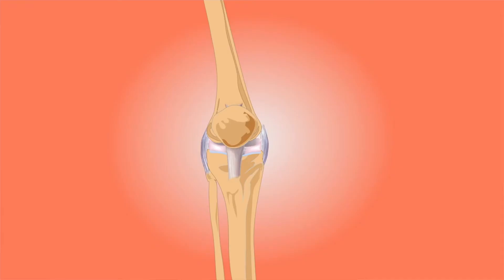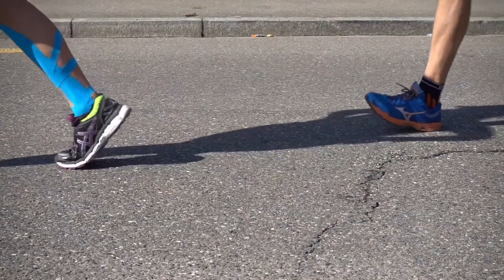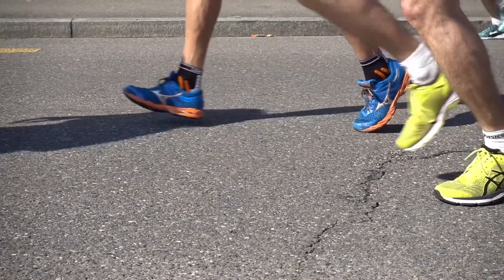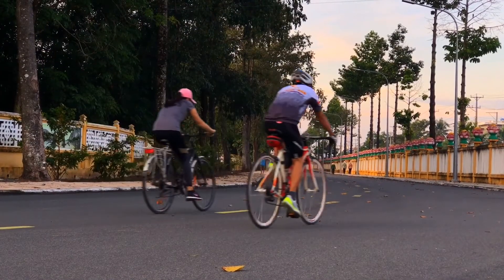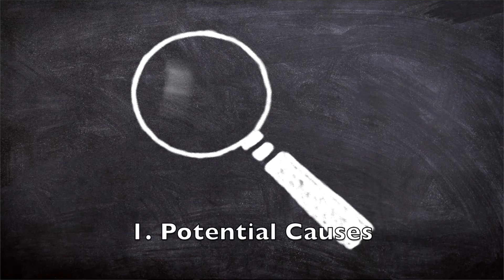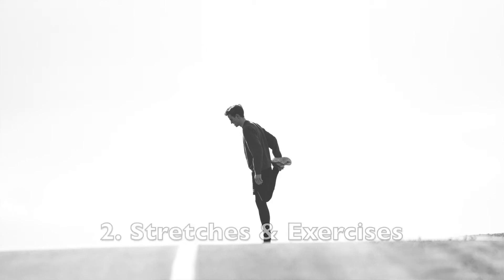Patellofemoral syndrome doesn't give us a whole lot of information in regards to the root cause of the issue. It does tell us that you're experiencing pain on the front or on the anterior side of your knee. There may be a whole bunch of reasons as to why — it could be repetitive jumping, repetitive landing, it could be an overuse issue from running or cycling too much, or you could just sit too much. We do know that it's the most commonly diagnosed type of knee pain and it more commonly affects women than men. We'll go over two things today: potential causes of patellofemoral syndrome, and stretches and exercises you can do about it.